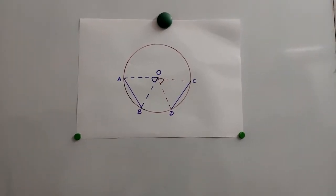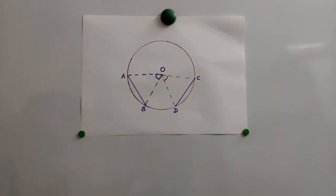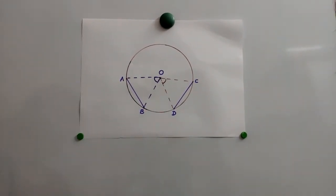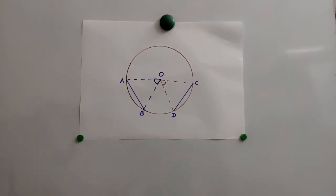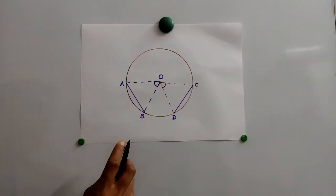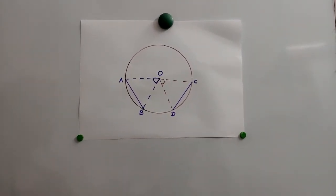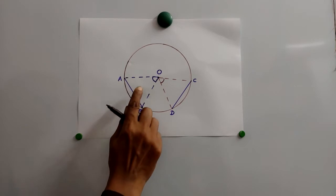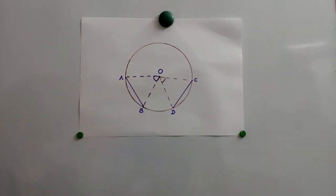But we are going to prove this. If the chord length is the same, then the angle is the same. Now we are going to prove the same using congruence. Here we have two triangles, and we have to find the congruence.